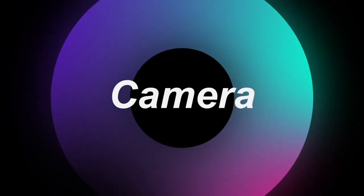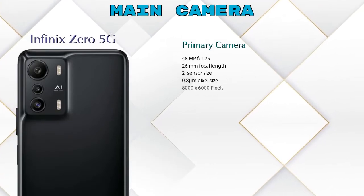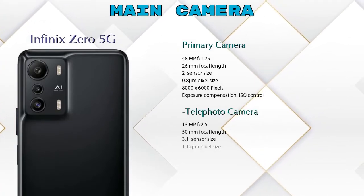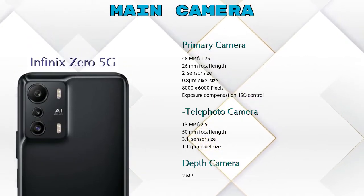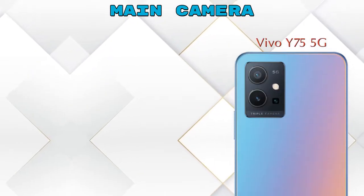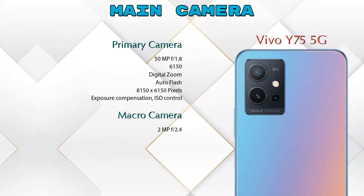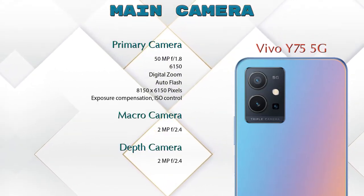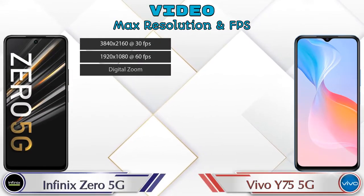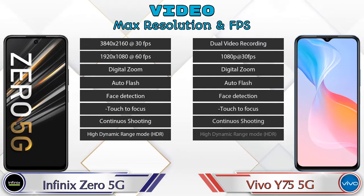Now let's look at the camera details. For the rear camera, the Zero 5G has three cameras: a primary camera, a telephoto camera, and a depth camera. The Y75 5G also has three cameras: a primary camera, a macro camera, and a depth camera. For video recording, both phones offer eight different types of features.